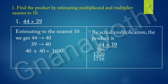By actual multiplication, the product is 44 into 39. If we multiply 44 into 39, we get 1,716.